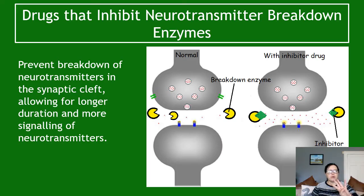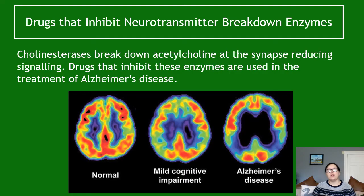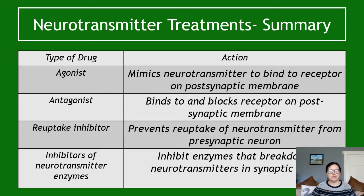Category four: drugs that inhibit neurotransmitter breakdown enzymes. In the diagram, the enzyme — pictured as a Pac-Man — normally chomps up neurotransmitters. The inhibitor blocks the enzyme's active site, preventing it from breaking down the neurotransmitters, so we get longer transmission and more signaling. An example: cholinesterases break down acetylcholine at the synapse; drugs that inhibit these enzymes are used in the treatment of Alzheimer's disease to help slow the decay of neurons over time. The diagram shows brain scans comparing a normal brain, mild cognitive impairment, and Alzheimer's disease.